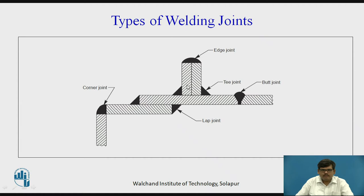Considering these two plates, which are placed exactly next to each other or face to face, the two faces are joined and when the welding is done at their edges, it is called an edge joint. So we have corner joint, lap joint, and edge joint.